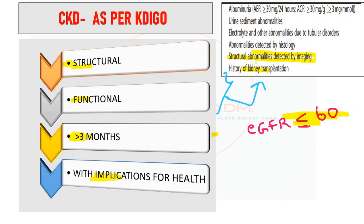Even a history of kidney transplantation fits the criteria of chronic kidney disease. Importantly, any structural abnormality must have implication for health — such as kidney disease progression. Additionally, the presence of albuminuria, urinary active sediments, or electrolyte abnormalities due to tubular disorders, if present for more than three months with health implications, also qualifies as CKD.